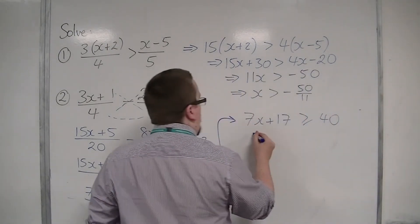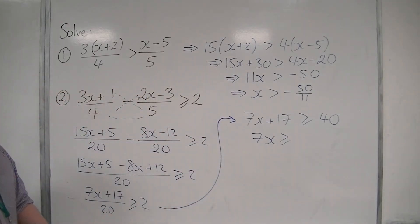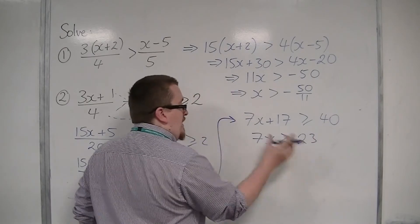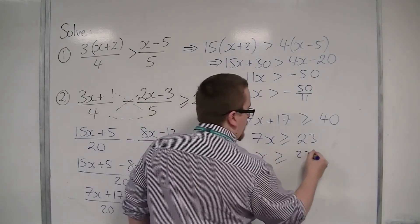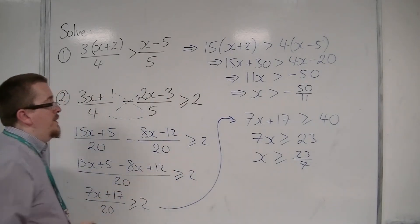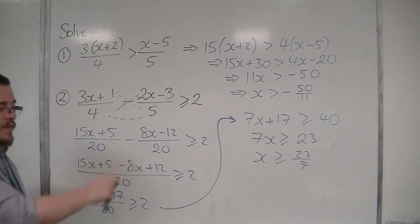Take the 17 from both sides, so 7x is greater than or equal to 23, and then divide both sides by the 7. So it really required you to use cross multiplication in order to get to the answer there.